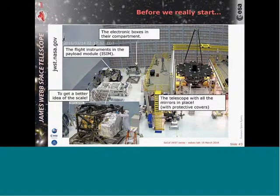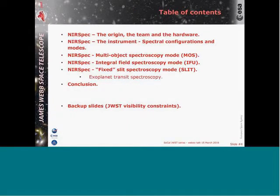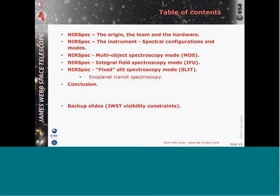That was a little two minutes of pure JWST. Moving to NIRSpec — we'll go through several steps: the origin of NIRSpec, why NIRSpec, the theme, and the hardware. Then I'll move to the instrument itself: generic information, configurations, modes. I'll focus on the three modes — multi-object spectroscopy, integral field spectroscopy, and the fixed slits. One of these slits is the aperture planned to be used for exoplanet transit spectroscopy. And I will move to the conclusion.